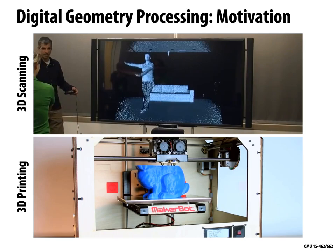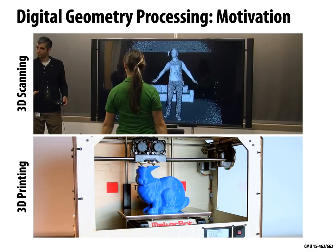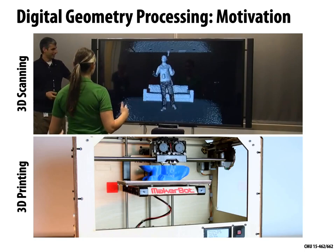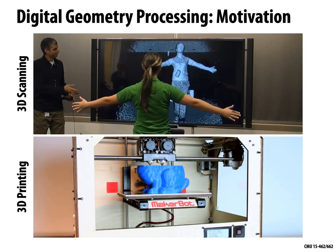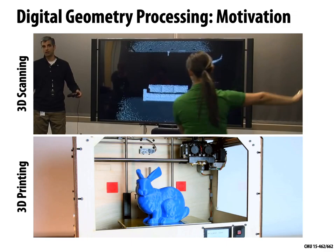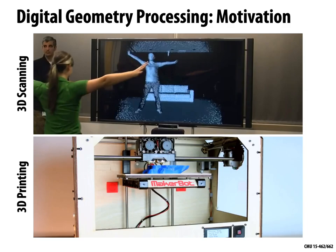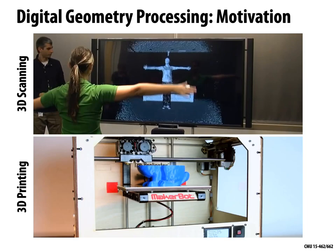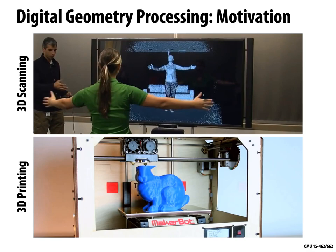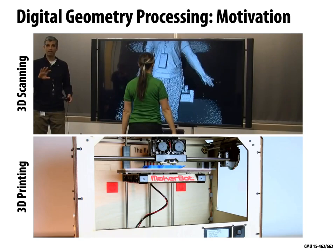We're seeing hardware both for bringing geometry into the computer and for taking digital geometry and turning it into real physical geometry. At the top we see a 3D scanning process done with a cheap consumer video game console — dancing in front of the screen brings in position and depth at high frame rates. On the bottom we see 3D printing: a polygonal model of a bunny being printed out slice by slice in plastic resin as a real physical solid object.